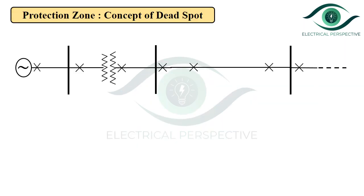Now let us discuss the concept of dead spot in the context of protection zones. We know that protection is organized in a very logical fashion to achieve selectivity. Selectivity means the protection system should be able to detect only that point in the power system at which the fault occurs, and disconnect only that part without disturbing the rest of the system. To achieve this selectivity, the entire power system is divided into several protective zones.